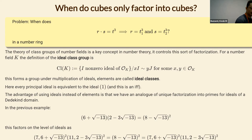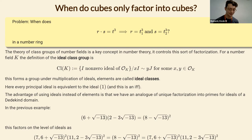The key point is that the ideal generated in our example is not principal — there is no single element that generates it. It's a non-trivial element of the class group. These two ideals lie in the same class, and that answers the earlier question: the class group is the cyclic group of order two in this case.